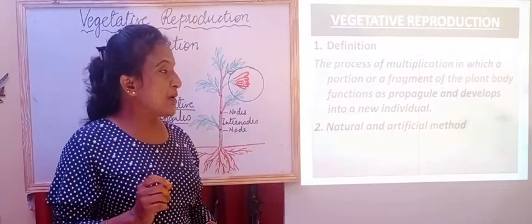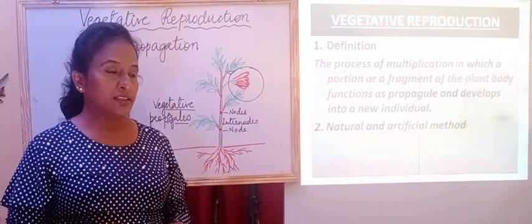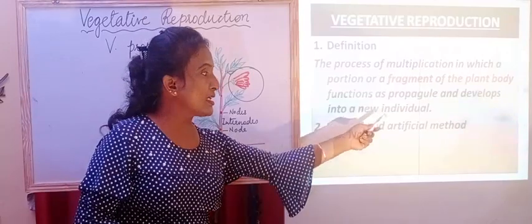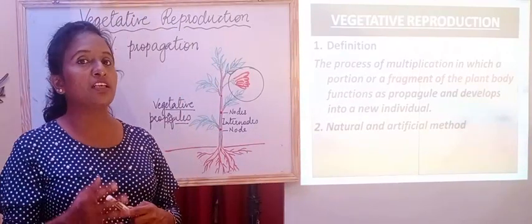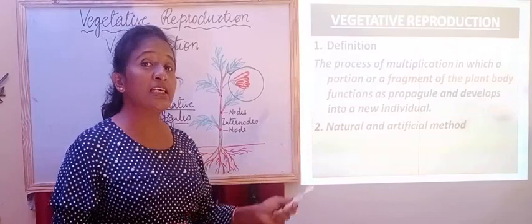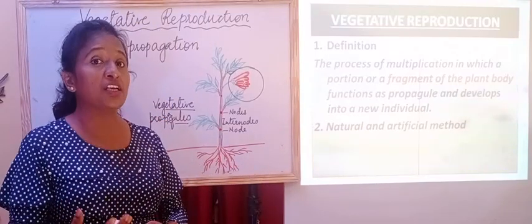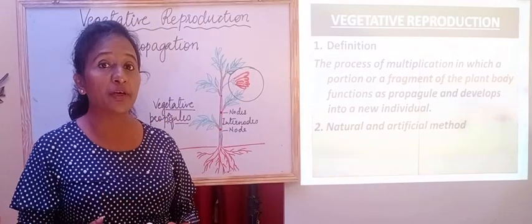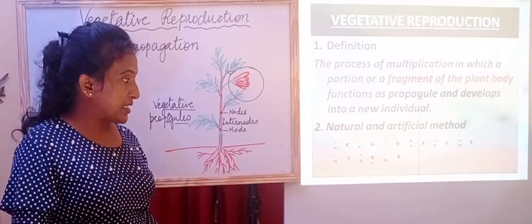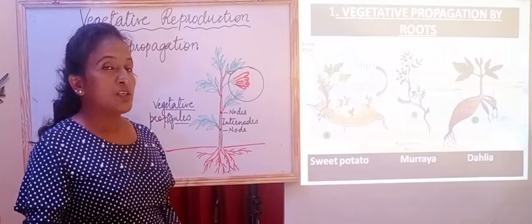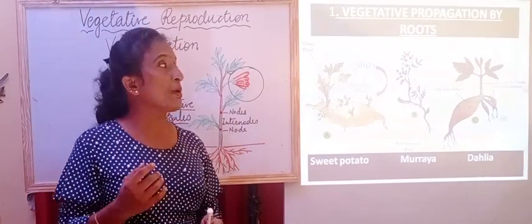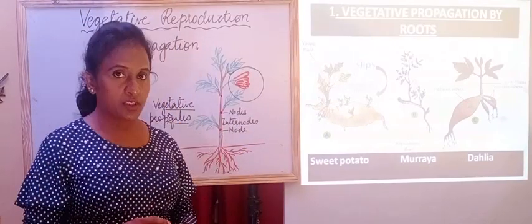Vegetative reproduction has two methods. One is the natural method and another one is the artificial method which is done by the gardeners. We will see how the natural mode of asexual reproduction takes place in flowering plants. The first one is vegetative reproduction or propagation by roots.